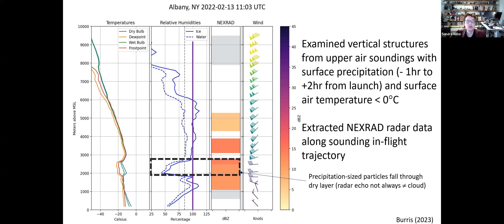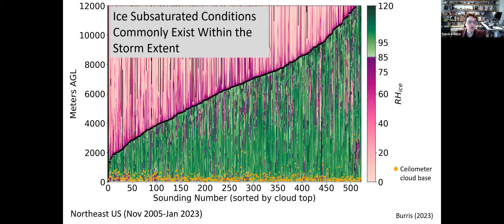Looking at a larger sample — about 522 soundings from Albany where surface temperatures were below zero and precipitation occurred within one to two hours — sorted by cloud top height, there are lots of pinks indicating very supersaturated conditions with respect to ice, but also lots of light greens showing subsaturated conditions within the storm extent. This confirms that a lot of ice subsaturated conditions exist within storms.